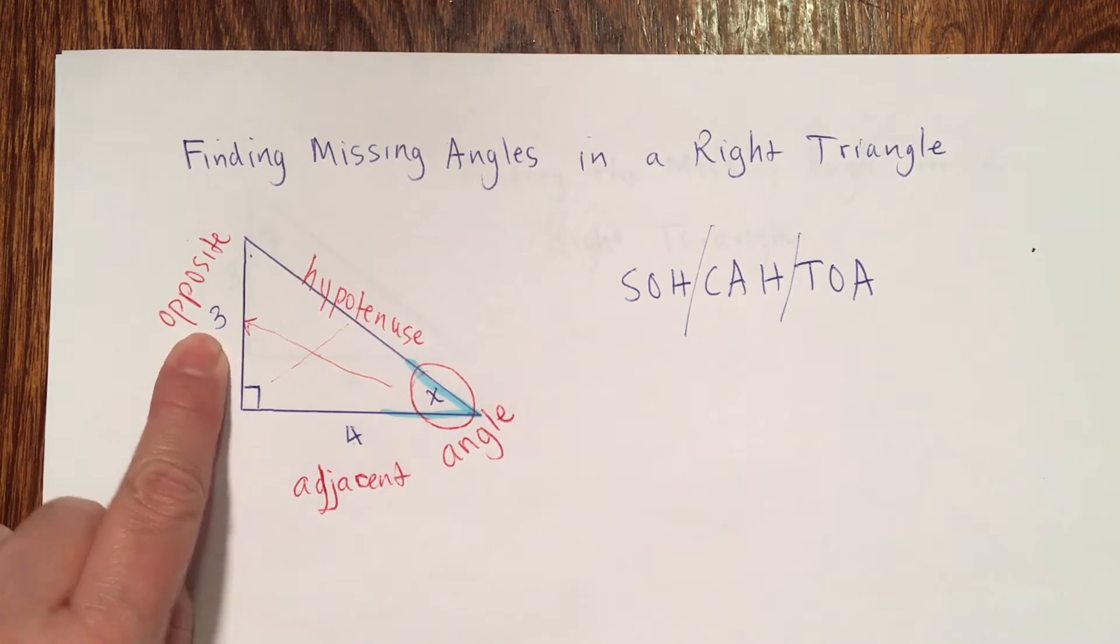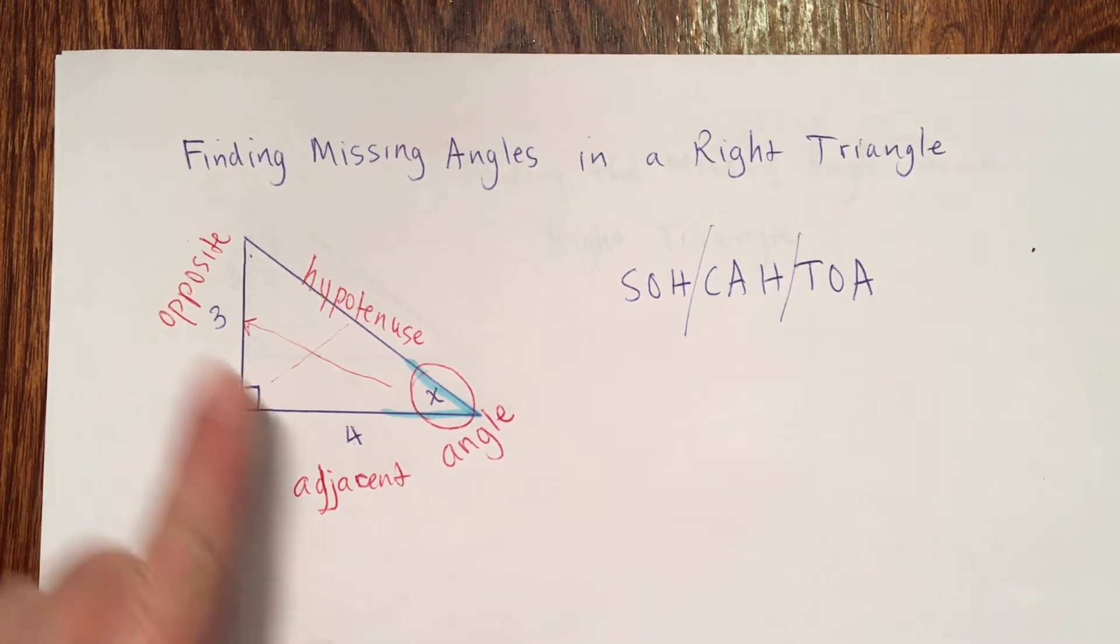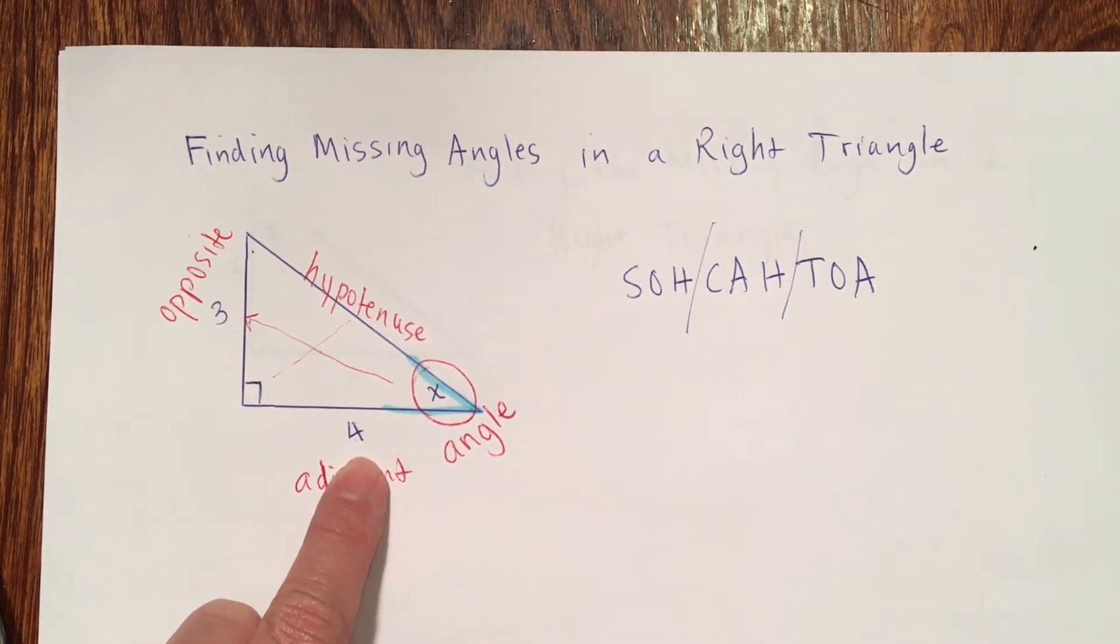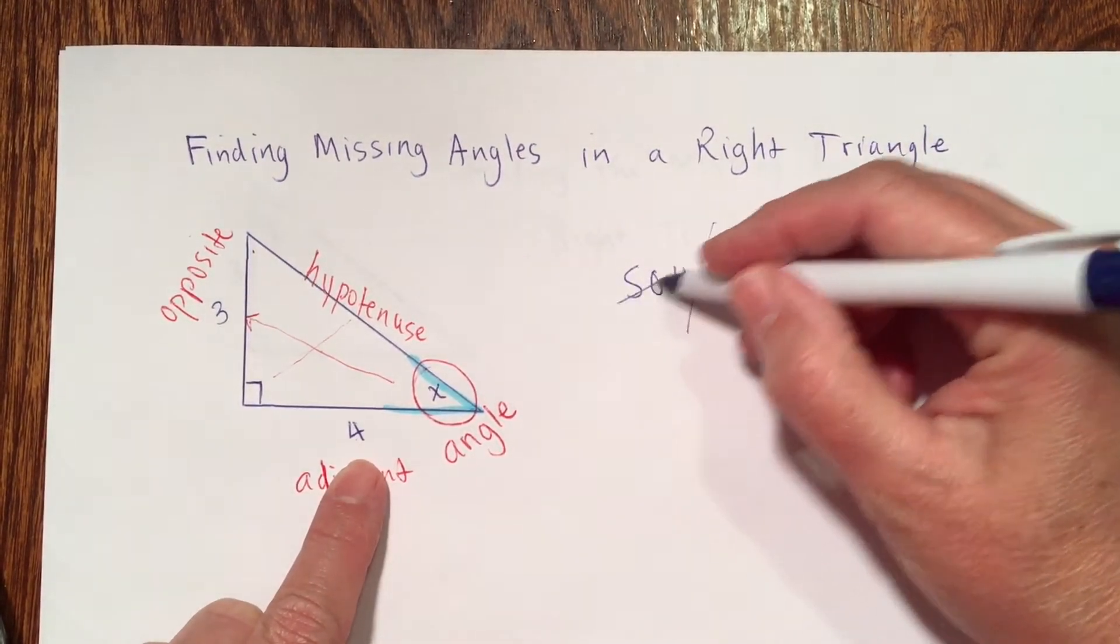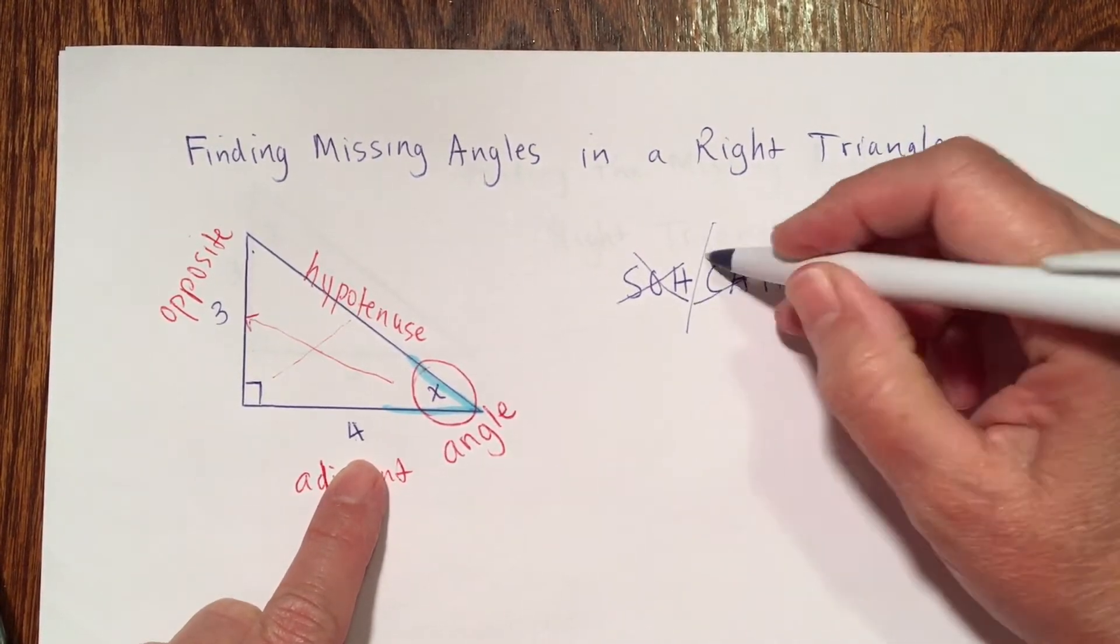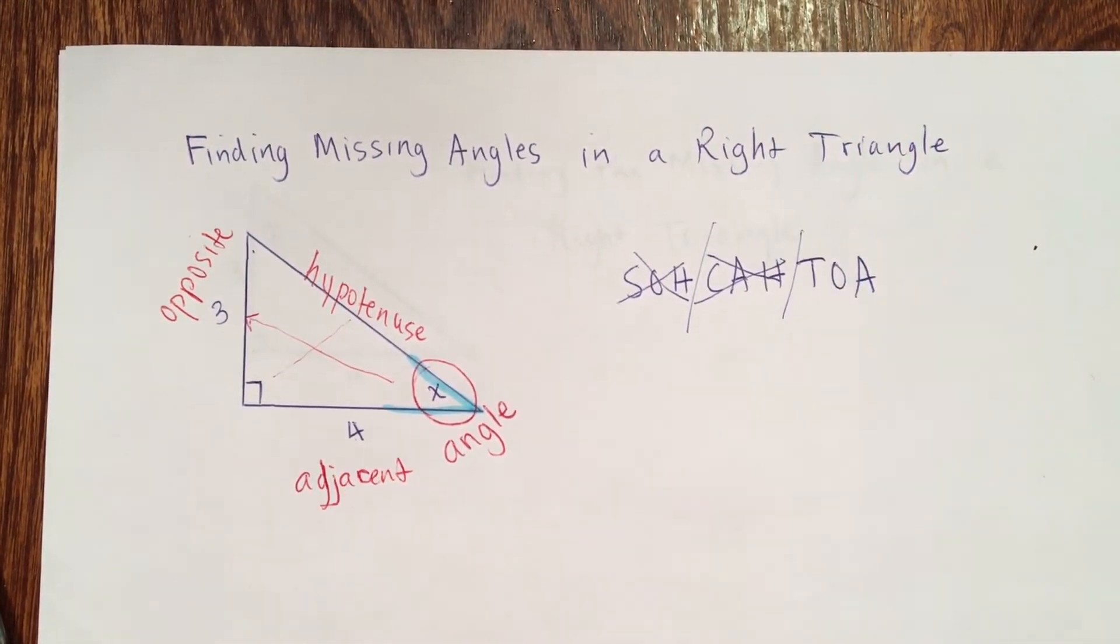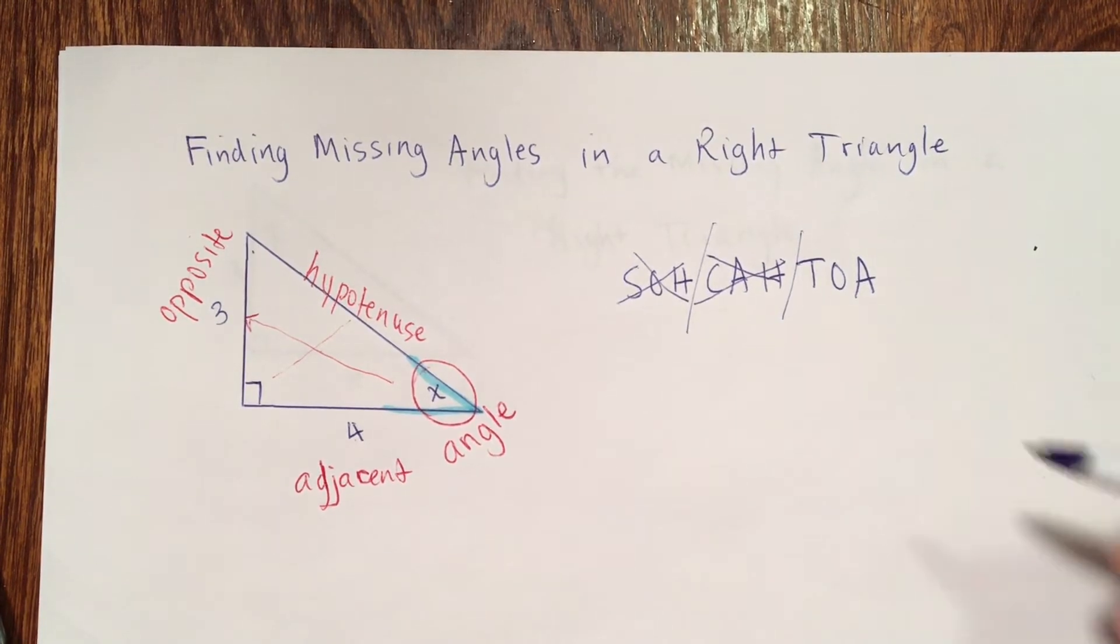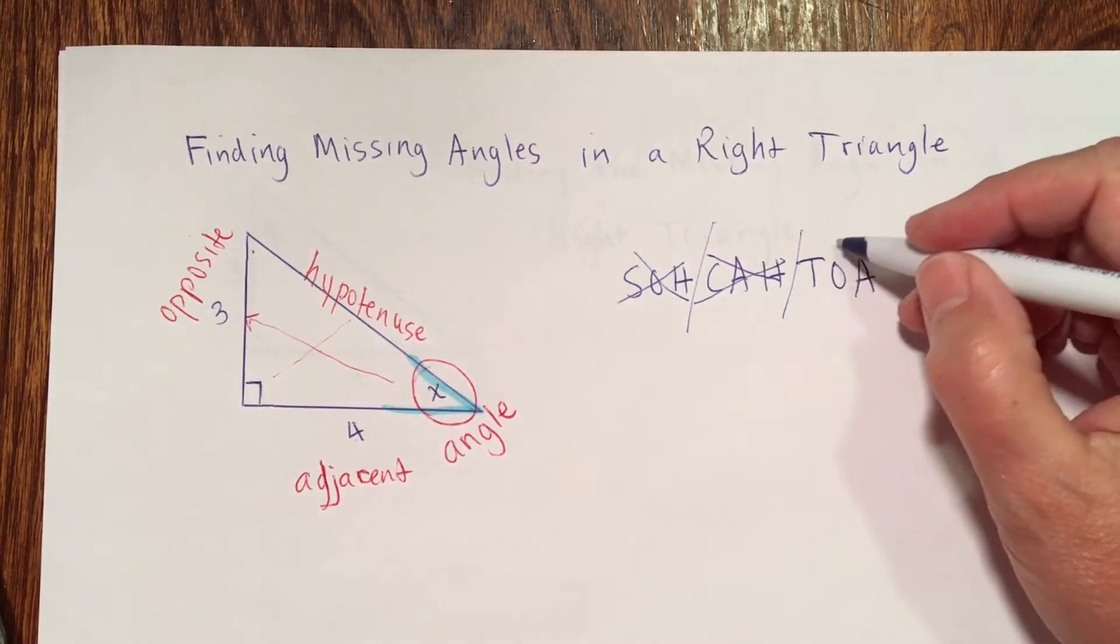Well, I have the opposite side, that length, and I have the adjacent side length. So, that eliminates sine because I need the hypotenuse for sine. That eliminates cosine because I need the hypotenuse for cosine. And that leaves me with tangent.